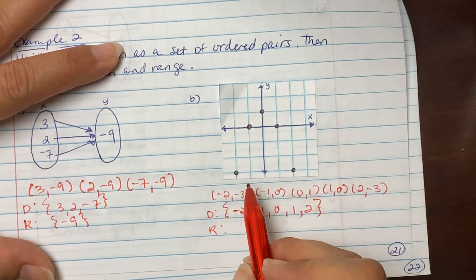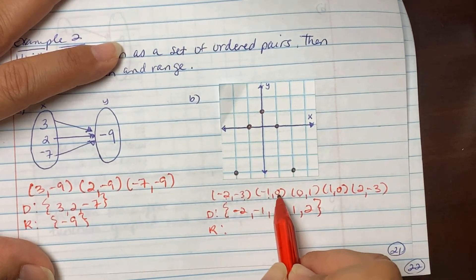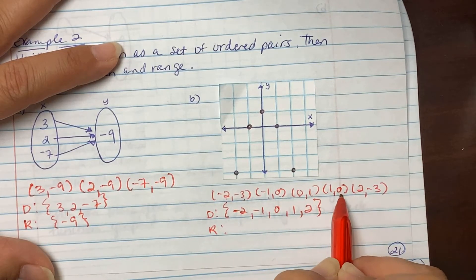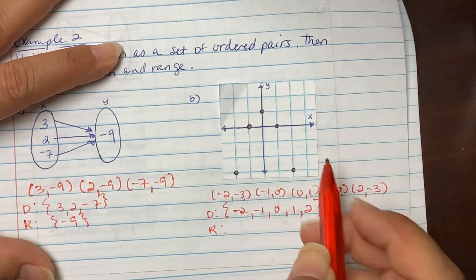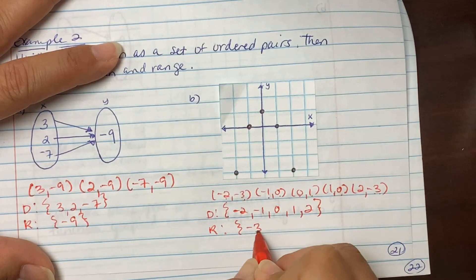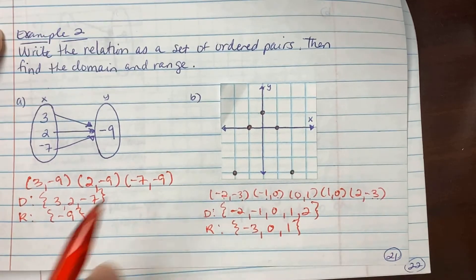But when we go to our range, we have a negative 3, a 0, a 1, a 0, and a negative 3. So the 0 and the negative 3 repeated, so you're just going to list it as negative 3, 0, and 1. There's only going to be 3 pieces.